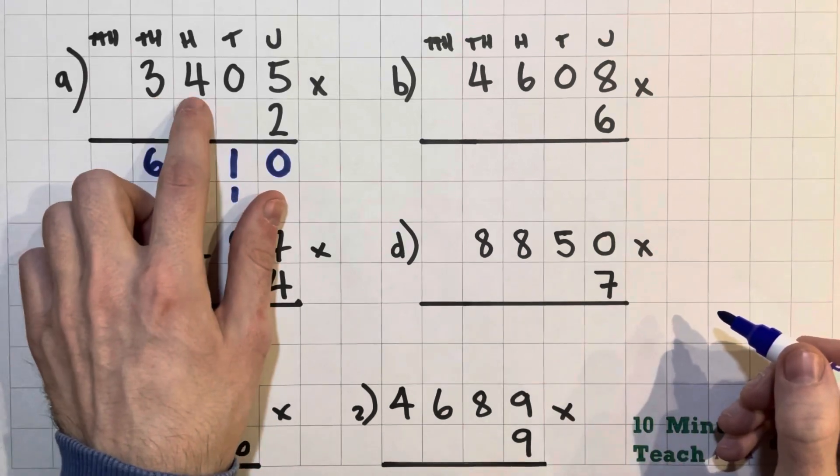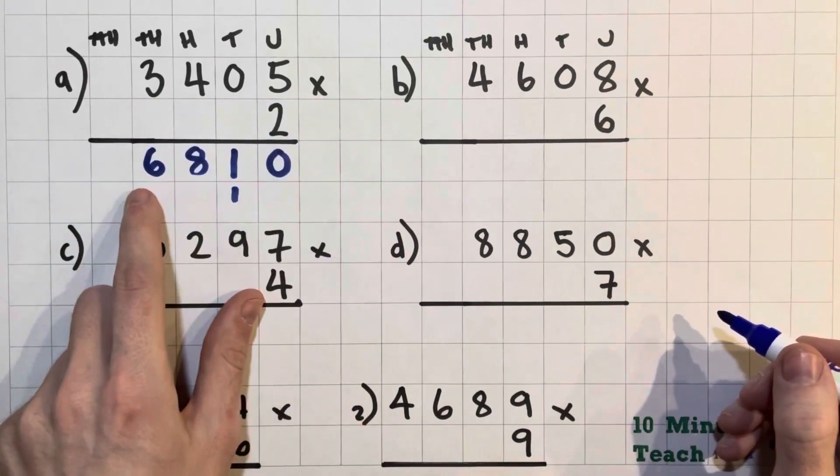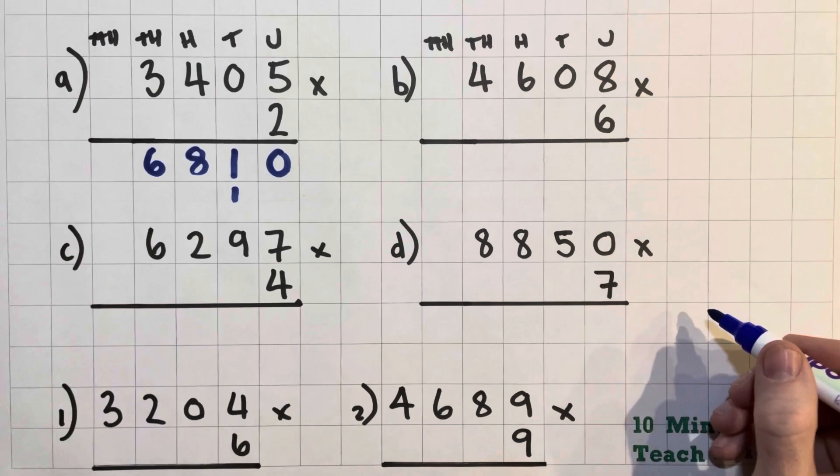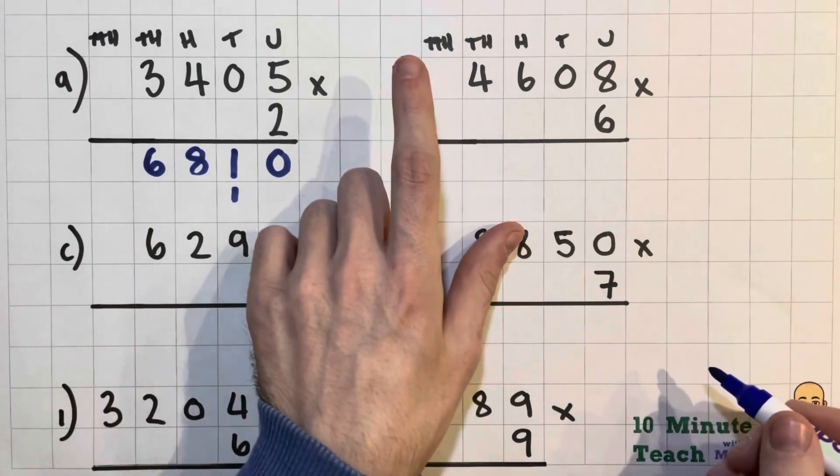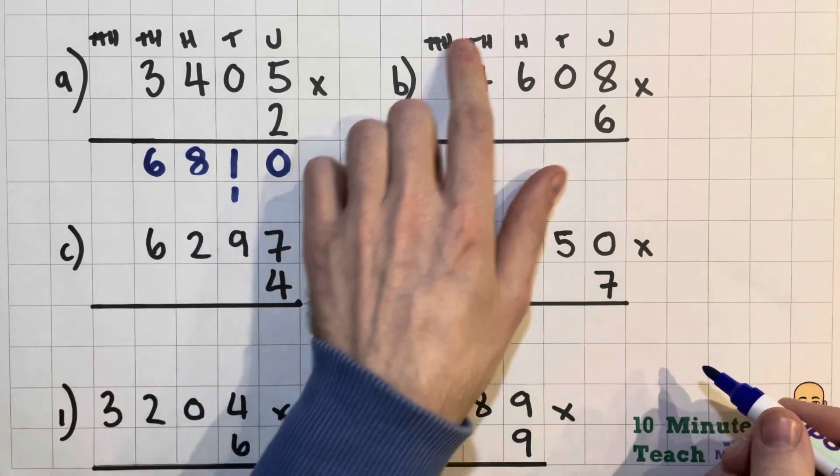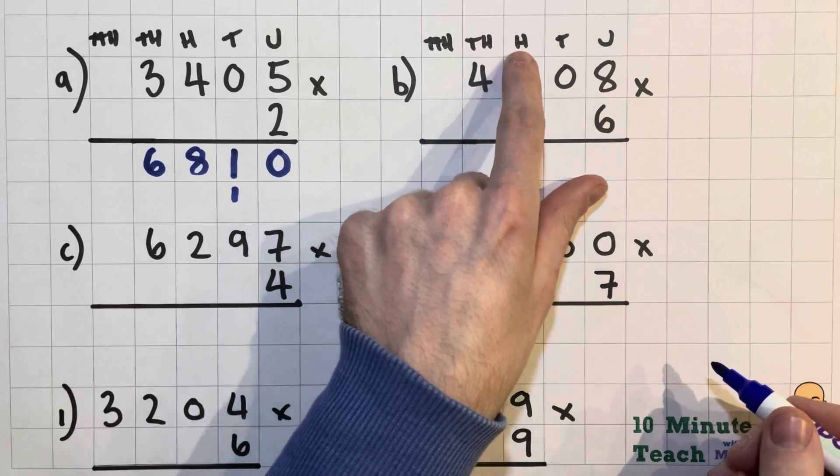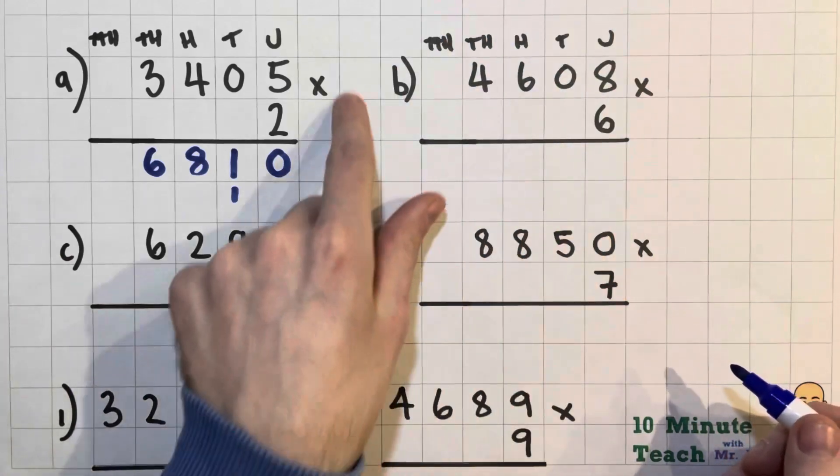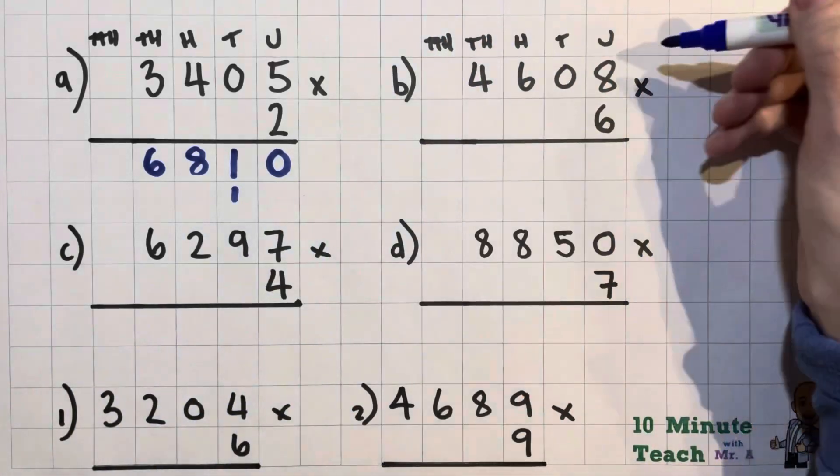So the answer to 3405 multiplied by 2 is 6810. Right, let's have a little go at B here. So again, I've put my place value headings in just to make it nice and easy. So let's start off over at the unit side again.